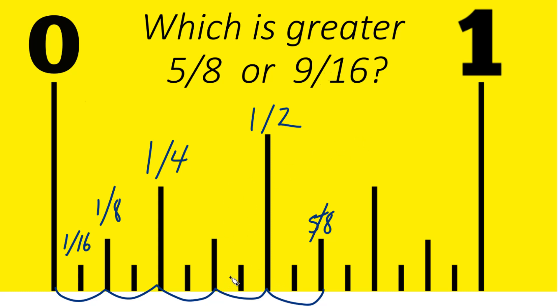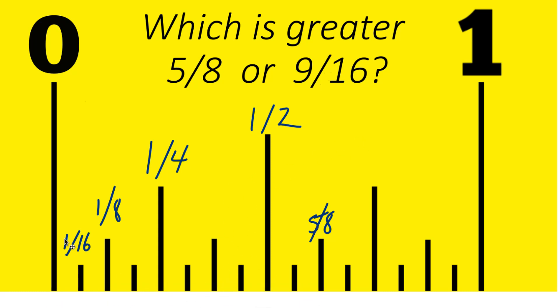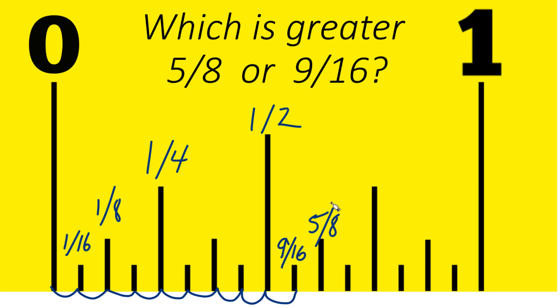For 9 sixteenths, we need to look at the smaller divisions because here's our 1 sixteenth. Let's count out nine of those: 1, 2 — and right there that's 9 sixteenths. And you can see that 5 eighths is larger than 9 sixteenths.